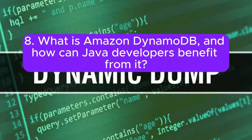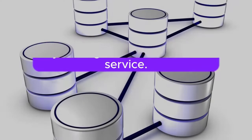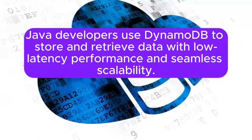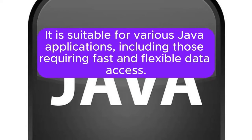Question 8: What is Amazon DynamoDB, and how can Java developers benefit from it? Amazon DynamoDB is a fully managed NoSQL database service. Java developers use DynamoDB to store and retrieve data with low latency performance and seamless scalability. It is suitable for various Java applications, including those requiring fast and flexible data access.